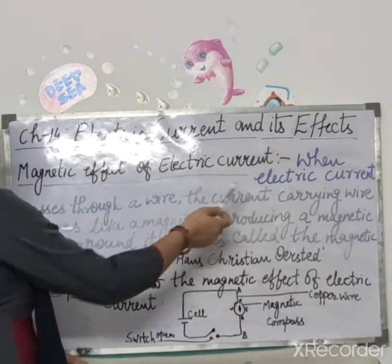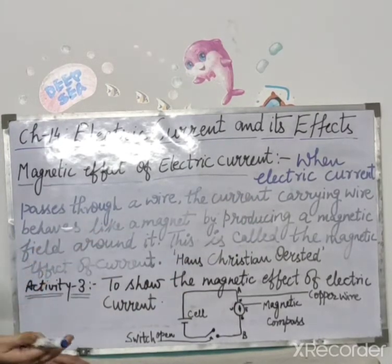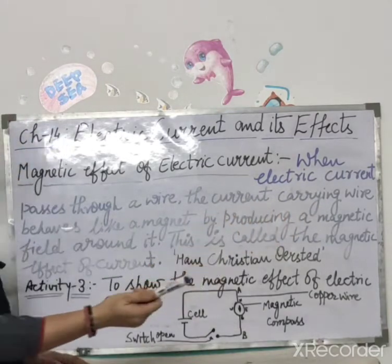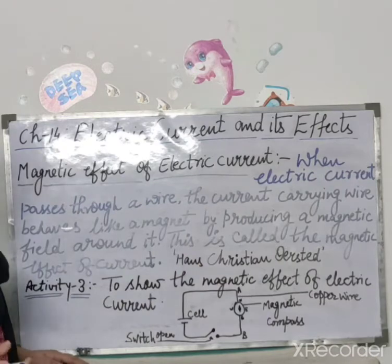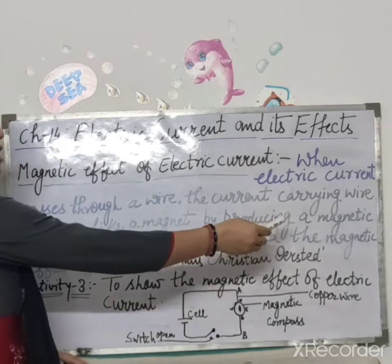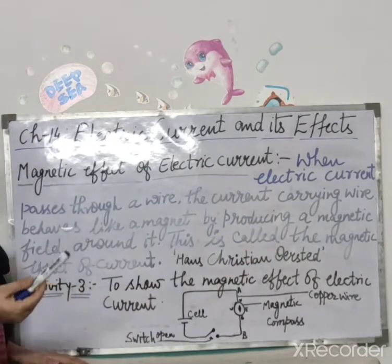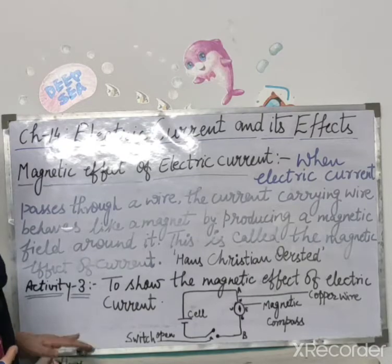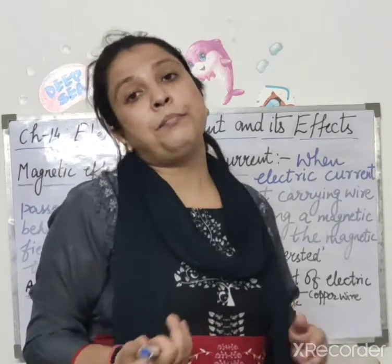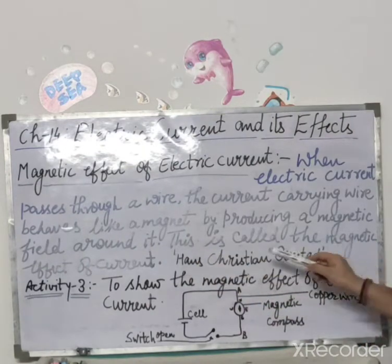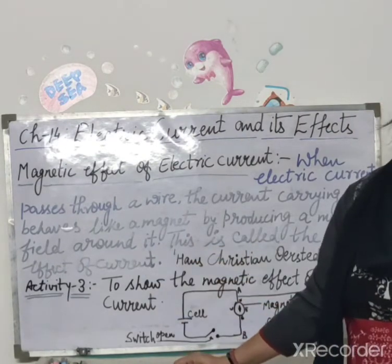Jab electric current pass hota hai kisi wire ke through, to current carrying wire ek magnetic ki tarike se behave karne lagta hai. Kyoki woh apne charo taraf magnetic field ko produce karta hai, is wajah se woh wire ek magnet ki tarike se behave karne lagta hai. Aur is effect ko uska magnetic effect kehte hain.